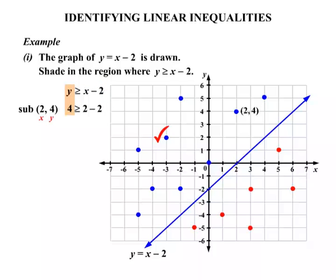Replace the y with 4. Replace the x with 2. Now simplifying that on the right, we get that 4 is greater than or equal to 0. Have a bit of a think about that. Is that true or is that false? Well, it is true. Yes, 4 is greater than 0. So give that a tick. Give the point a tick as well.